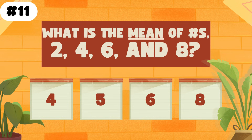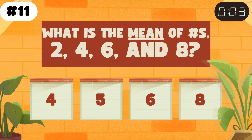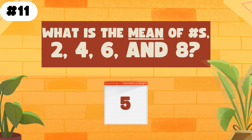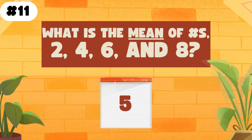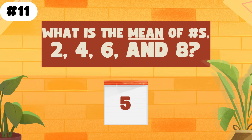What is the mean of the numbers 2, 4, 6, and 8? The answer is 5. To find the mean of numbers, you add up all the numbers to find the sum, then count the total number of values you added, and then divide the sum by the count of numbers to get the mean.